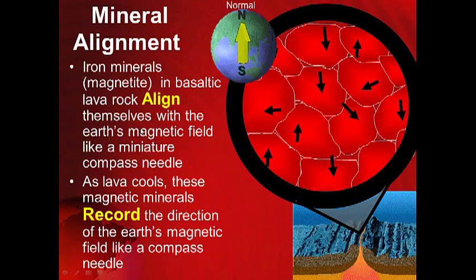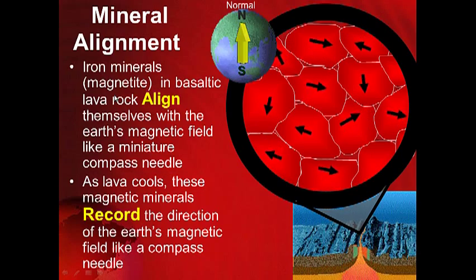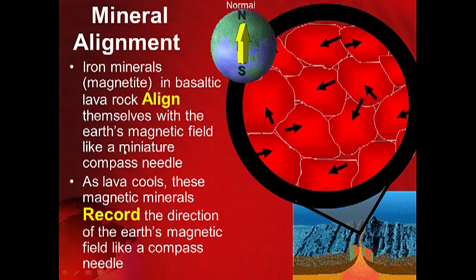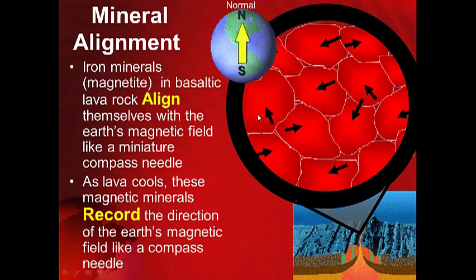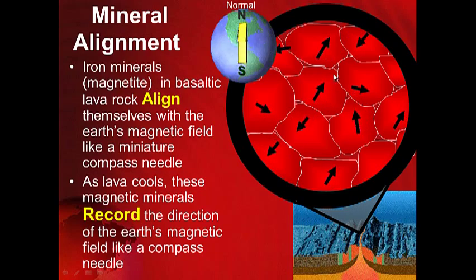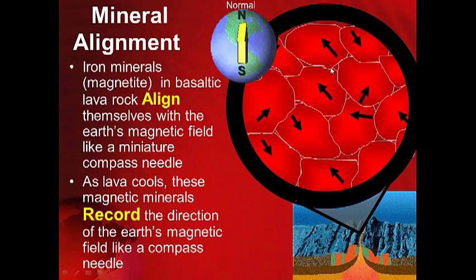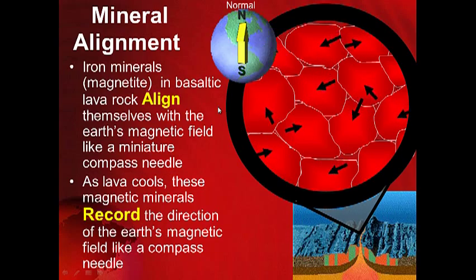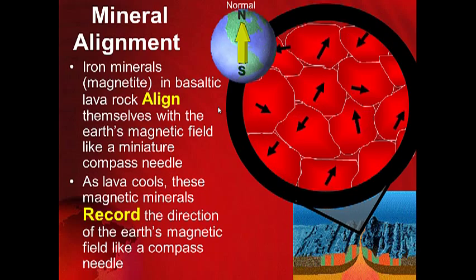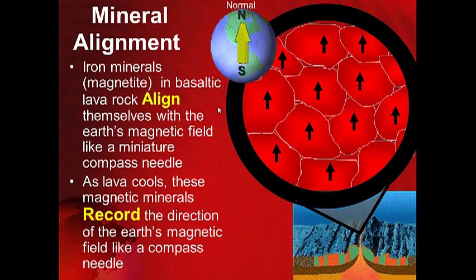Now here's where it starts getting a little confusing. Iron minerals — magnetite — in basaltic rock align themselves with the earth's magnetic field like miniature compass needles. All lava has these little magnetite minerals, which are iron minerals found in lava. These little minerals align themselves with the earth's magnetic field just like little compass needles.